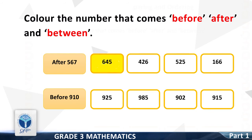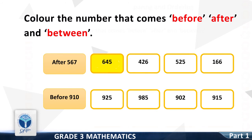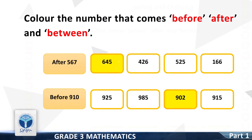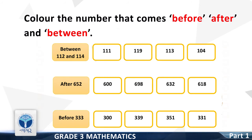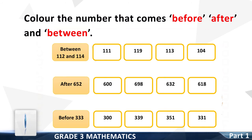Now, before 910. Good, it is 902. Color the box. Now color the number between 112 and 114. Good, it is 113. Color the box.